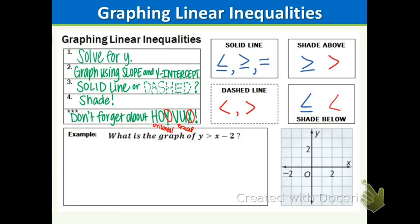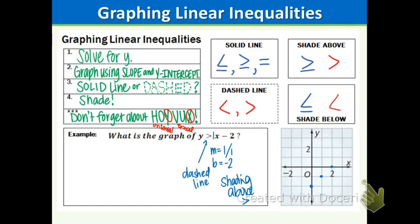Let's graph this example. The slope m = 1 and b = −2. First, plot the y-intercept at −2. The slope is positive 1 over 1, so go up 1 over 1 repeatedly and connect the points. Now, should we do a solid line or a dashed line? Take a look at that symbol — there is no line underneath, so we draw a dashed line. The greater than symbol also means we're shading above. So draw a dashed line through these points.